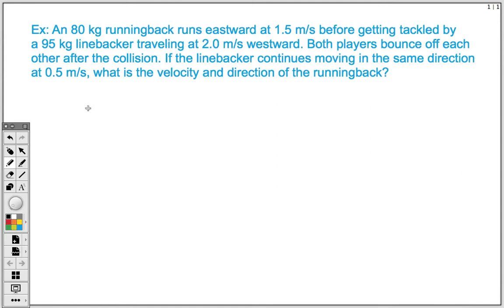Thank you for tuning in for another physics lesson with Mr. M. Today we are going to be covering another conservation of momentum type problem. This will be an elastic collision type problem where two objects come together and then bounce off each other after the collision. The main concept here is that the total initial momentum is equal to the total final momentum of the collision.